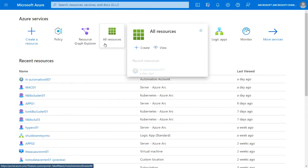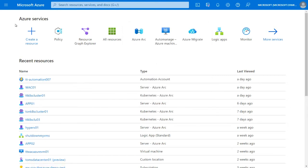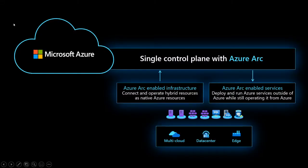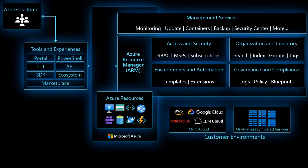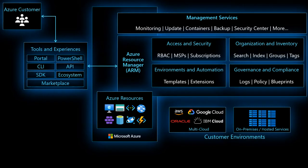Before showing how to onboard servers to Azure Arc, let me jump back to the slides. This is the high-level architecture. As Azure customers, we use tools and experiences - the portal, PowerShell, CLIs, APIs, SDKs - to interact with Azure Resource Manager. This allows us to do role-based access control, subscription management, tagging, indexing, search, policies, and much more. This is the magic of how we manage Azure resources.